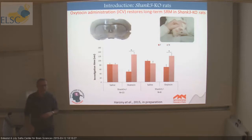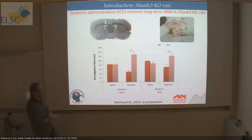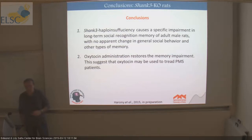It seems oxytocin application may rescue the phenotype of these rats, and it may even be used as a treatment for PMS patients. A patent has been filed. The last thing I would like to talk about is related to social isolation.